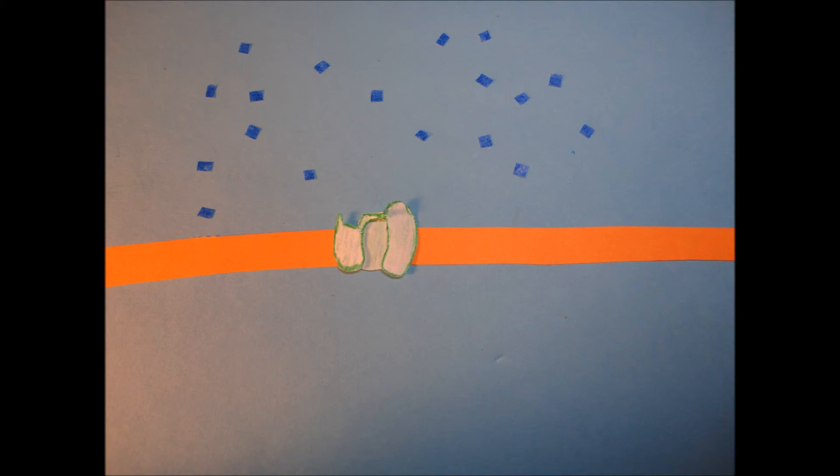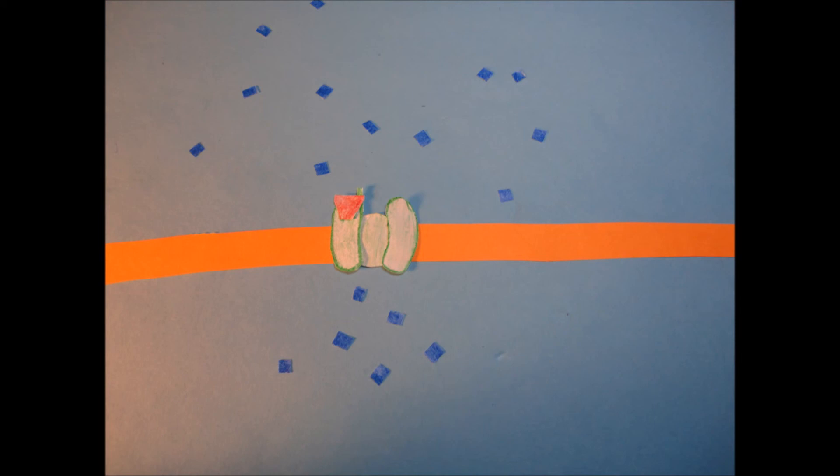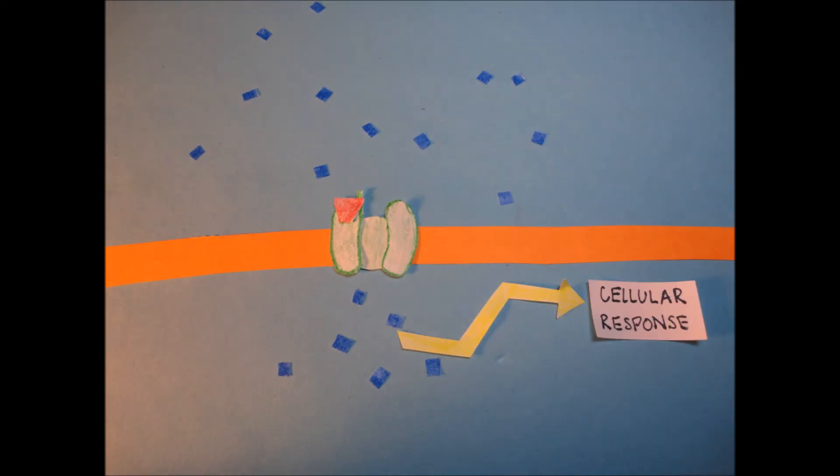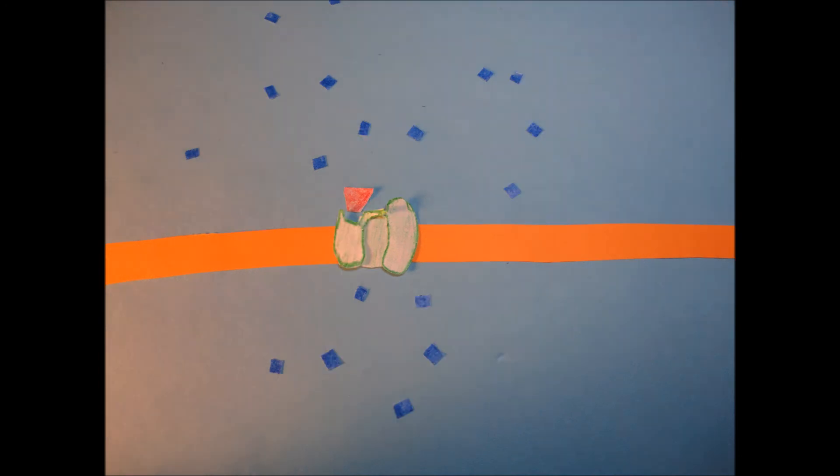When a signal molecule binds to the protein, the gate opens and specific ions flow through the membrane to rapidly change the ion concentration in the cell. This then leads to a cellular response. The ligand then removes itself from the channel, closing the gate.